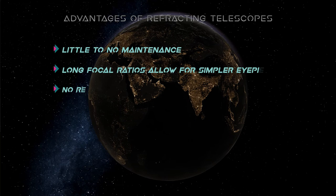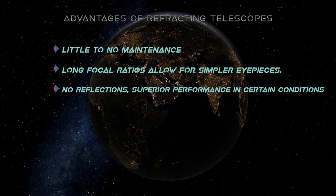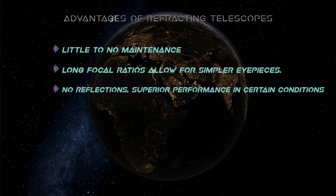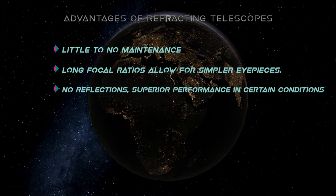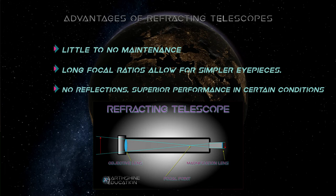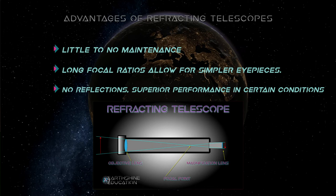There are some advantages to using a refracting telescope. Refractors have little to no maintenance. The optics are permanently aligned. Once the lens is in the telescope body, that's it. It's mounted and that's where it stays. There's long focal ratios for simpler eyepieces. Since the telescope will be very long, the eyepiece can be very simple. Simple design usually means less problems. There's also no reflections. You don't have to worry about light pathing as much. You also get superior performance in certain conditions.